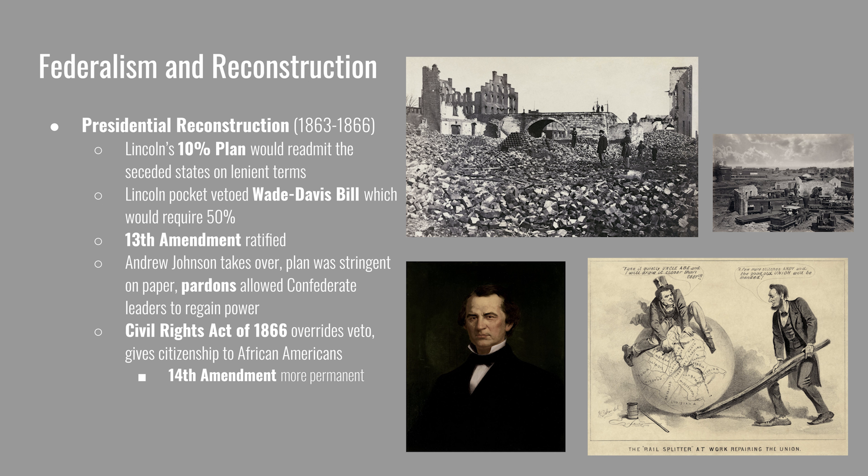Radical Reconstruction continued with the passage of the Tenure of Office Act. Since Republican Secretary of War Edwin Stanton was in charge of military reconstruction, Congress wanted to protect him from Johnson firing him. The act ensured the presidential cabinet originally appointed by Lincoln could not be fired without congressional consent. Andrew Johnson fired Stanton anyway, angering Congress, who brought articles of impeachment against him for breaking this law. The Senate impeachment trial failed to remove Johnson by just one vote.